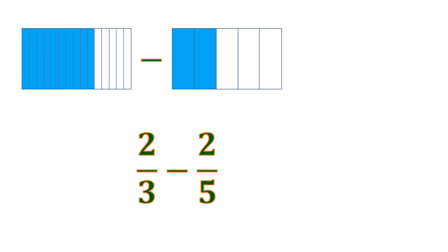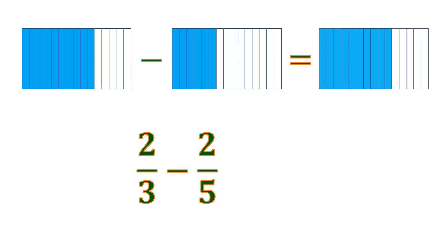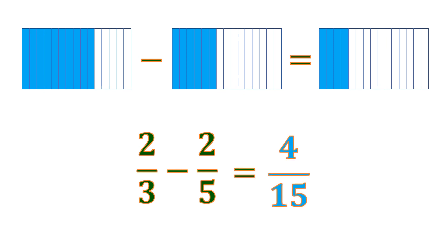Now for 2 fifths, since we want to make it the same as 10 fifteenths and the given is 2 thirds, we divide each piece of 2 fifths into 3. So from 2 fifths, it becomes 6 fifteenths. Since both have a total of 15 boxes, they fit and we can subtract. From 10 fifteenths, we remove 6 fifteenths, and what's left is 4 fifteenths. The difference of 2 thirds and 2 fifths is 4 fifteenths, and we cannot reduce this anymore. That's how you add or subtract dissimilar fractions.